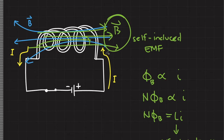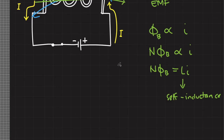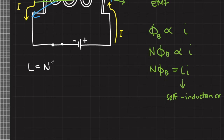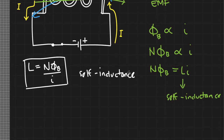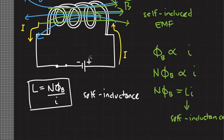In our case, if the current is increasing, then this is the direction of the resulting magnetic field due to the induced EMF. If the current is decreasing, the induced EMF will produce a magnetic field to oppose the decreasing magnetic flux. Going back to self-inductance, we can rewrite this expression in terms of self-inductance L. This is our expression for self-inductance.